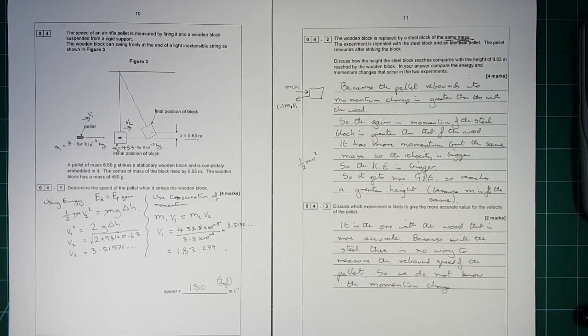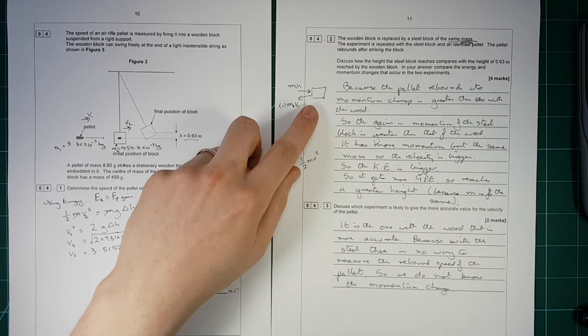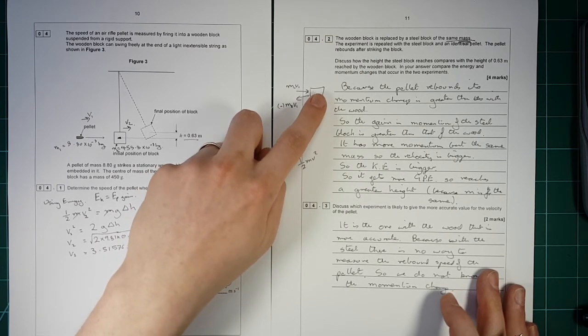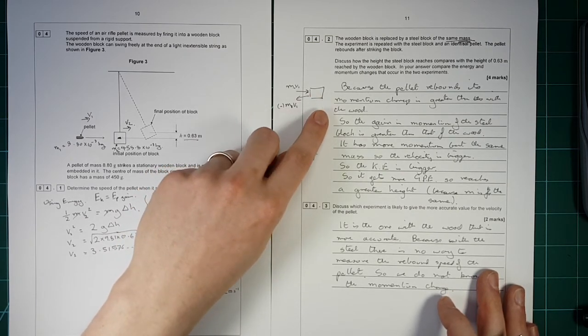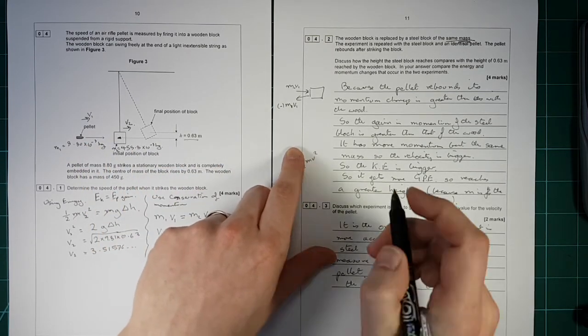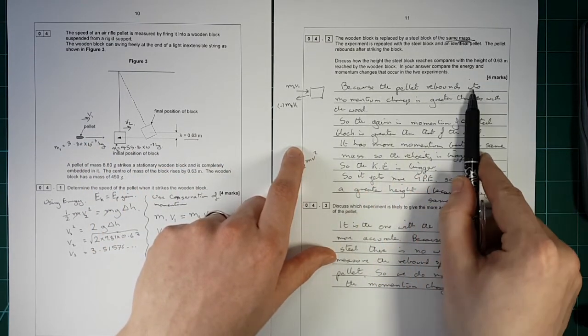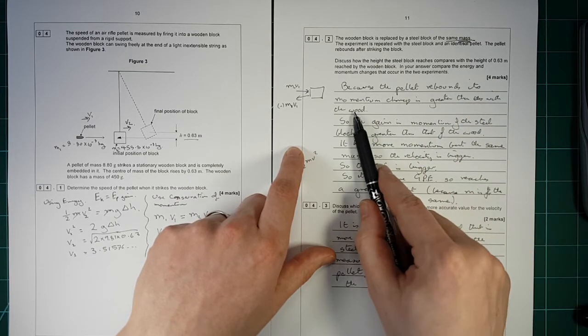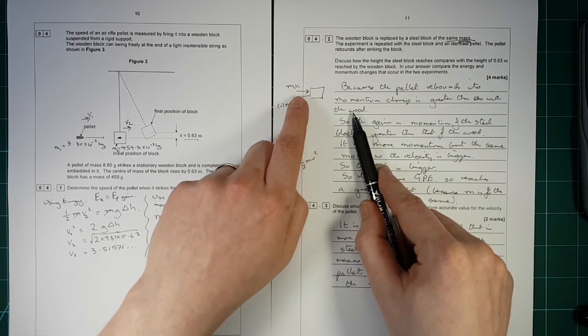Okay. That's question four. Now, when you go through a question like this, my advice to you would be to do it in a nice logical order, step by step, from the beginning of the incident to the end. So as I went through this, because the pellet rebounds, its momentum change is greater than that of the wood. So I've done the momentum change.